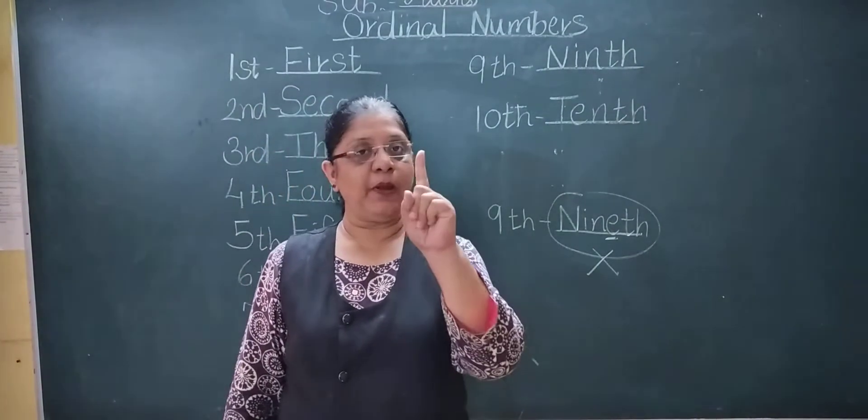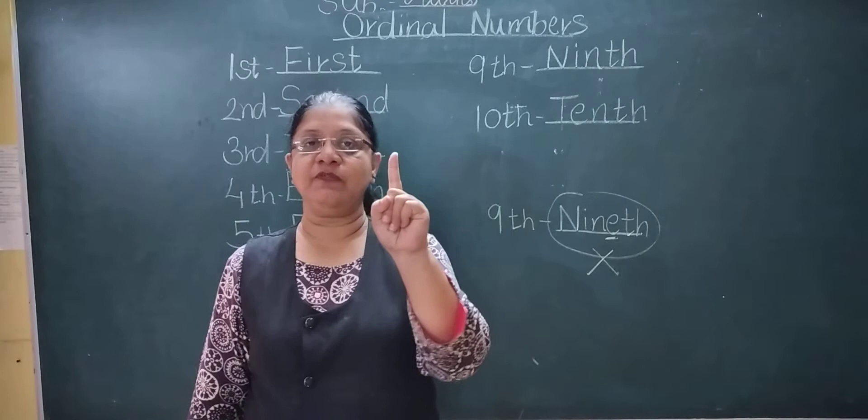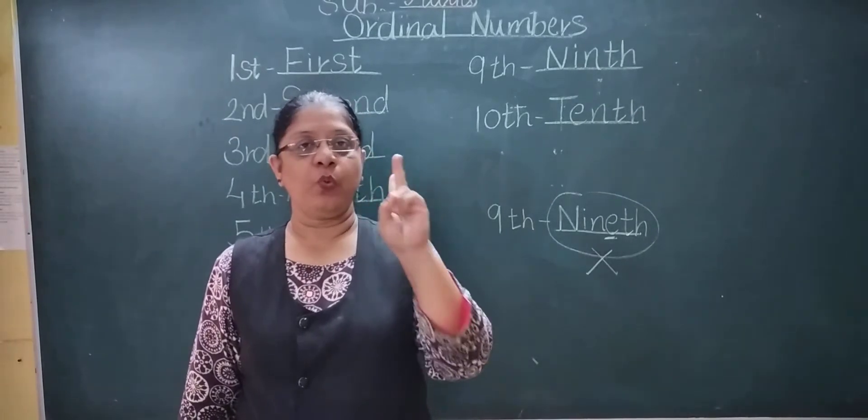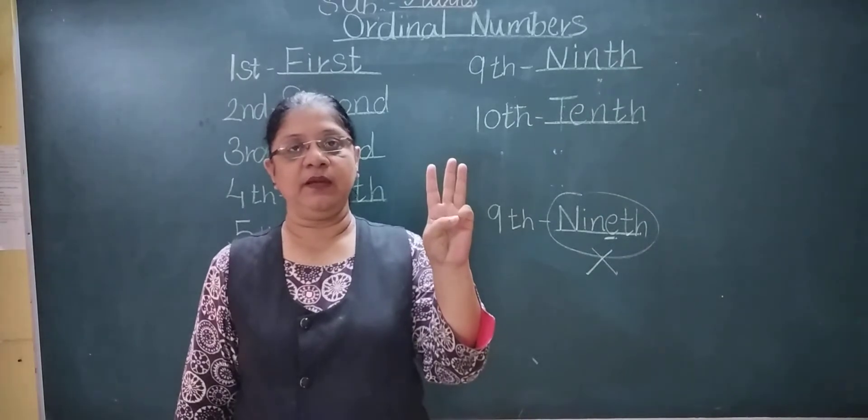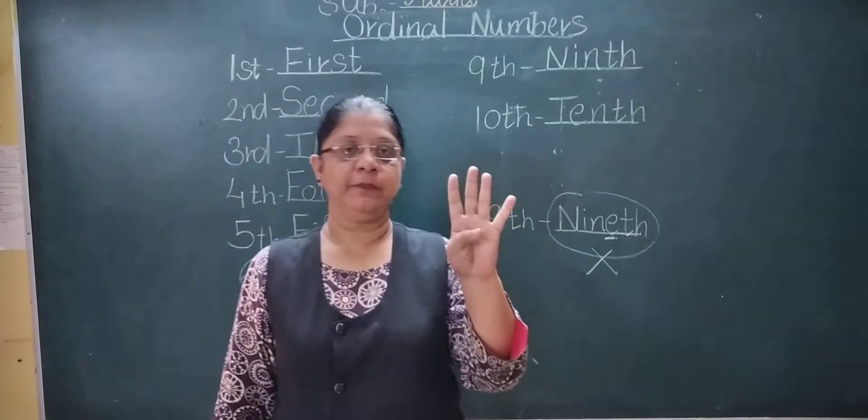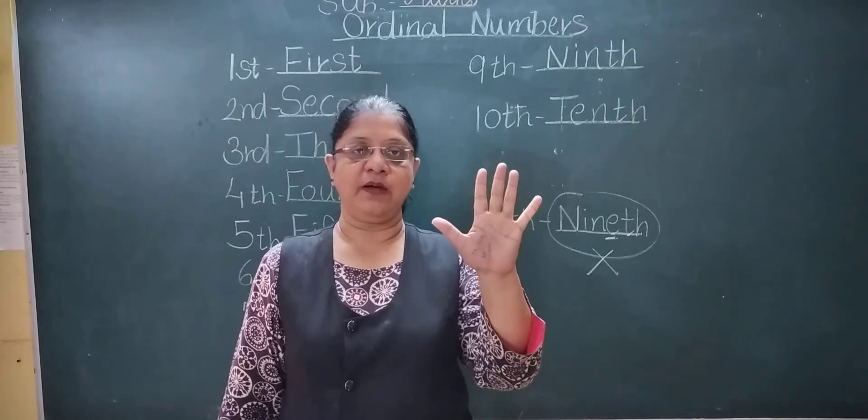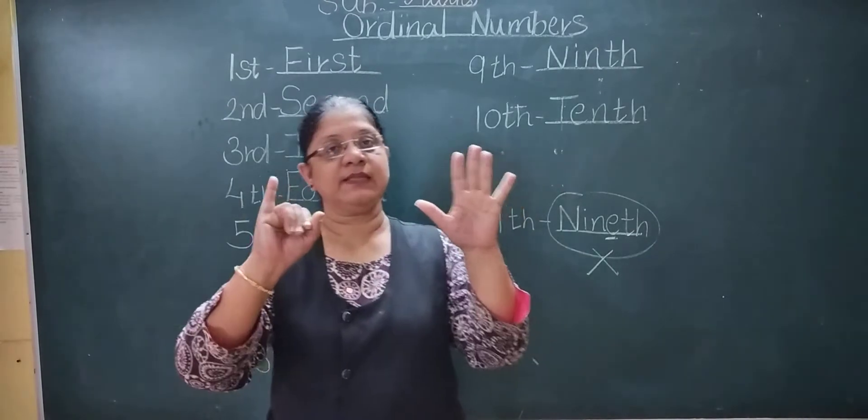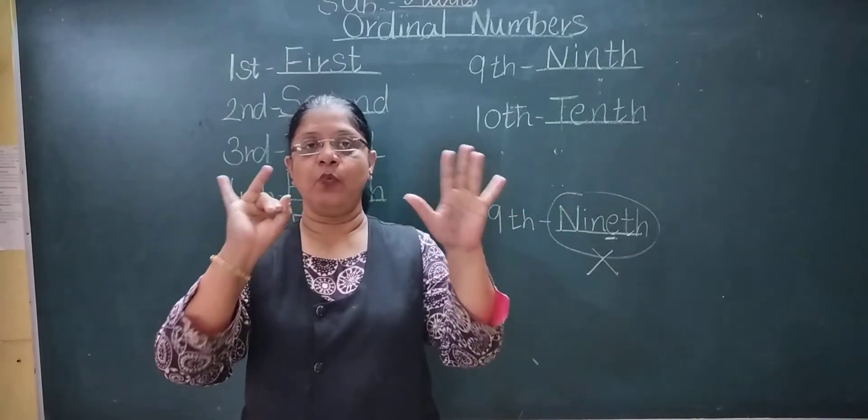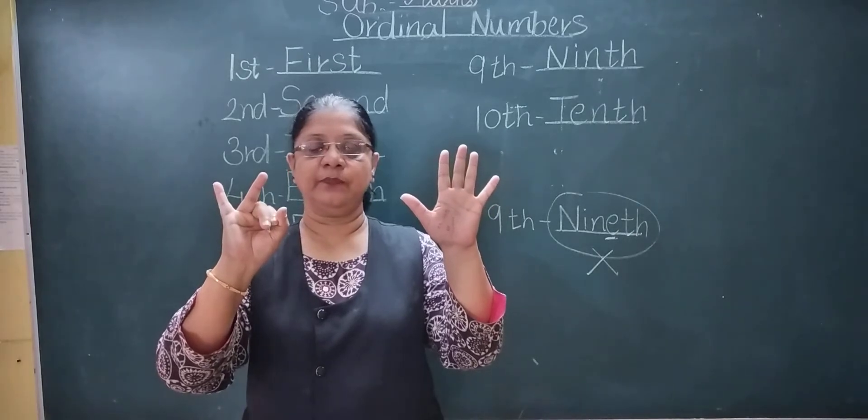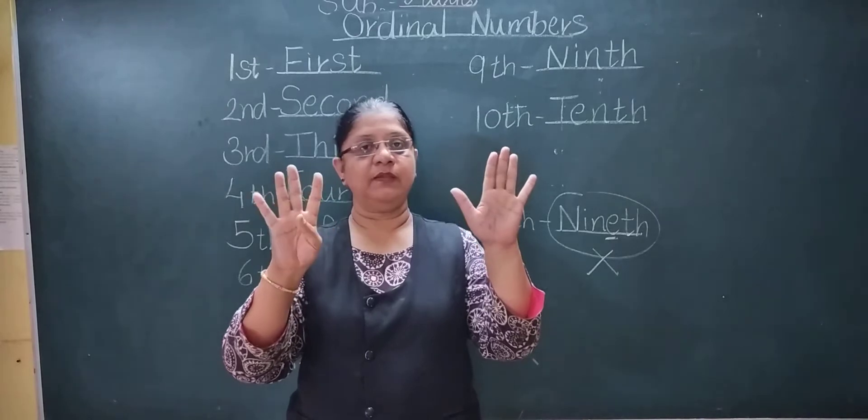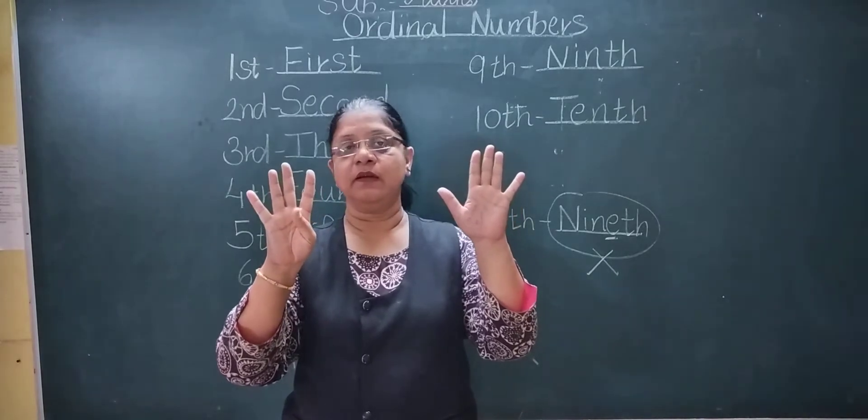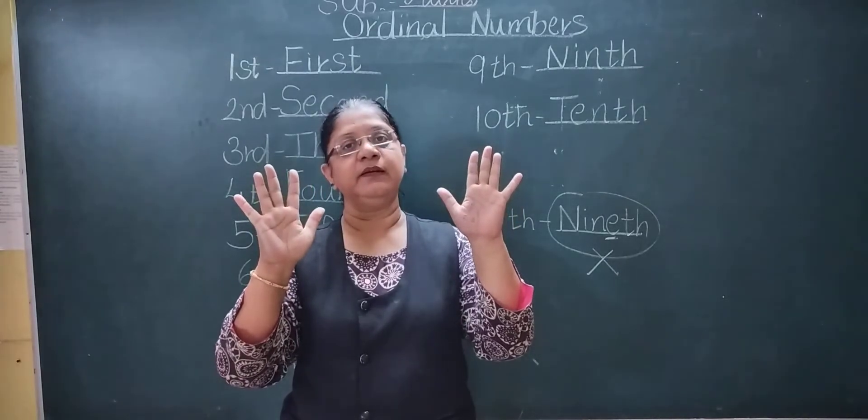That is the first table of one. Say one ones are one, one twos are two, one threes are three, one fours are four, one fives are five, one sixes are six, one sevens are seven, one eights are eight, one nines are nine, one tens are ten.